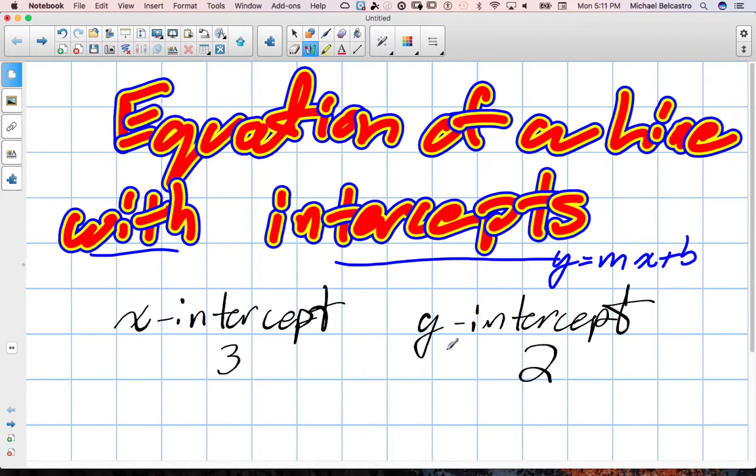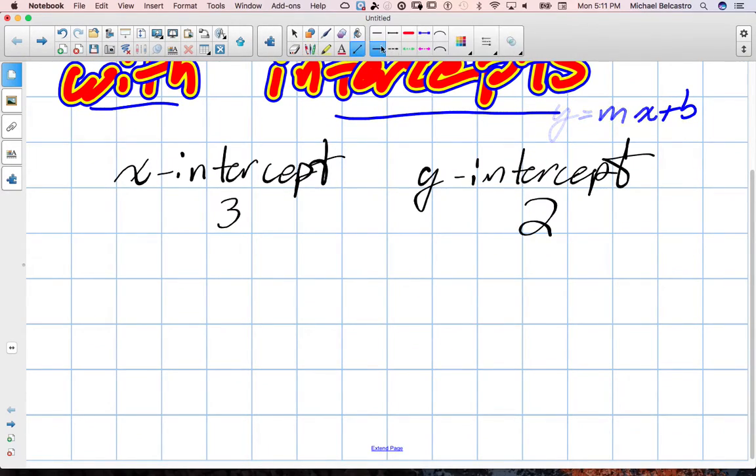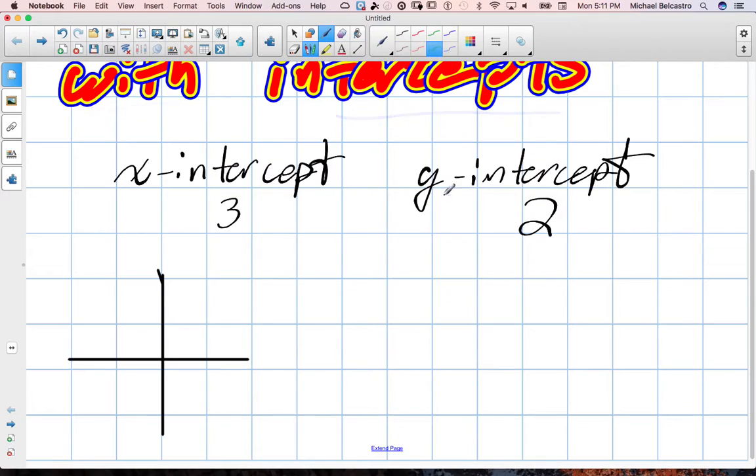But we've only been given the intercepts of the equation, so I'm going to do a rough sketch. The y-intercept will be approximately here at 2, and the x-intercept will be approximately here at 3. So we have a line that's going to connect these two.